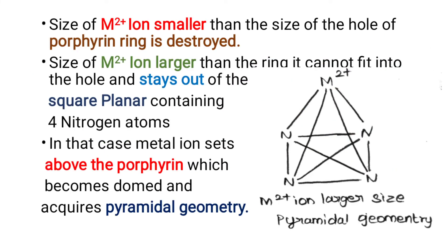If the size of the M2+ ion is smaller than the size of the hole, the porphyrin ring is destroyed. If the size of the M2+ ion is larger than the ring, it cannot fit into the hole and stays out of the square planar ring. We will get pyramidal geometry. In such cases, the metal ion sits above the porphyrin ring. The square planar becomes domed, which means shaped like a cone or pyramid, and acquires pyramidal geometry.